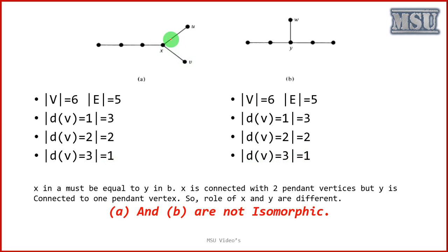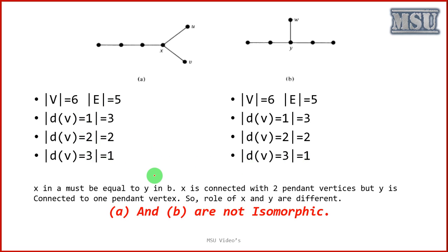Only one vertex contains degree value 3. In this graph, x has degree value 3 and here y has degree value 3. Even though all the properties are satisfied, these graphs are not isomorphic because the role of x is not played by y. X is connected with two pendant vertices e and v, but y is connected with only one pendant vertex w. So these two graphs are not isomorphic.